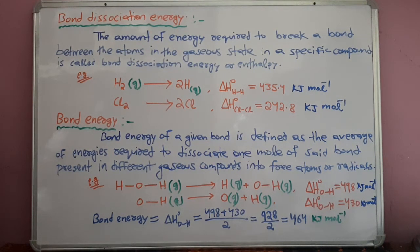the hydrogen bond dissociation energy is 435.4 kJ mol inverse. Similarly, chlorine molecule bond dissociation energy is 242.8 kJ mol inverse.